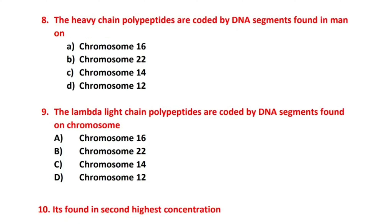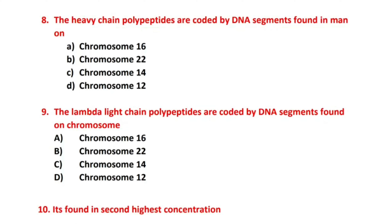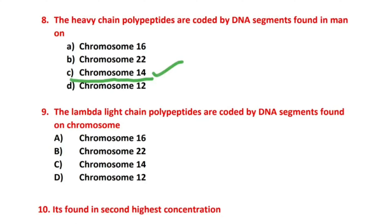Question number 8: The heavy chain polypeptides are coded by DNA segments found in humans on which chromosome number? Options: chromosome 16, 22, 14, or 12. The correct answer is chromosome number 14. On chromosome 14, there are DNA segments that code for heavy chain polypeptides.